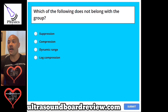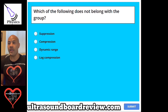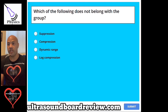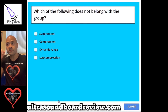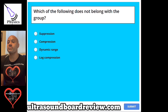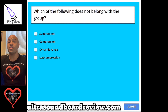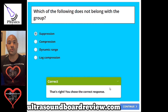Question 89. Which of the following does not belong with the group? A, suppression. B, compression. C, dynamic range. Or D, log compression. The answer is A, suppression. Suppression is synonymous with reject and threshold.